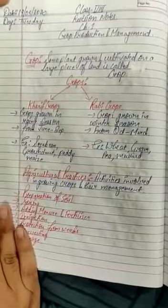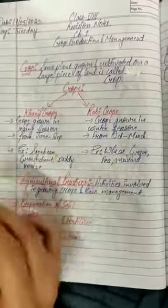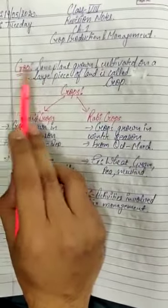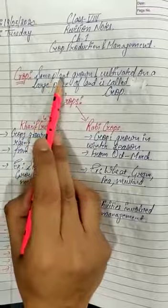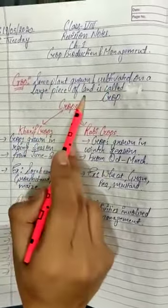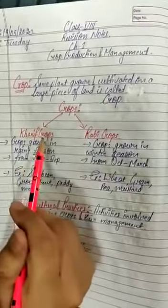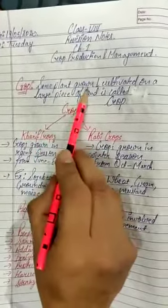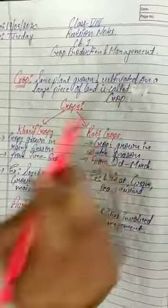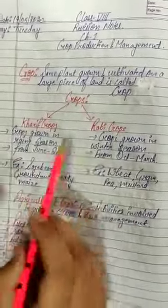The starting of the chapter: what is a crop? When the same type of plants are grown and cultivated on a large piece of land, it is called a crop. So we have learned already the crops are divided into two main kinds.